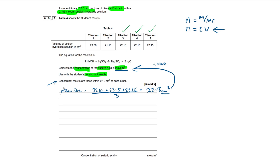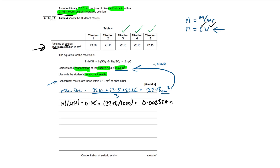The variables given to us are the mean titre as the volume of sodium hydroxide, and its concentration from the question. So: moles of NaOH = 0.105 × (22.13 ÷ 1000). Putting that into the calculator gives us 0.002324 mol.